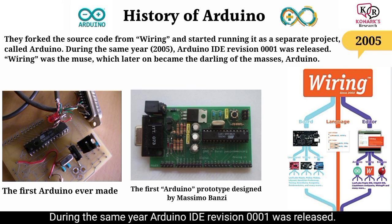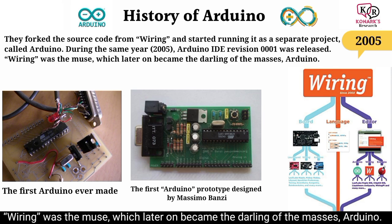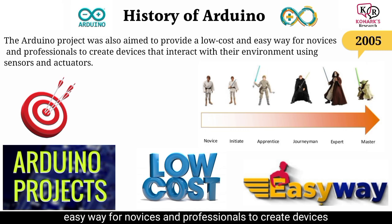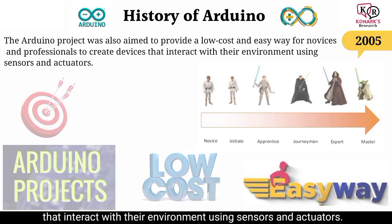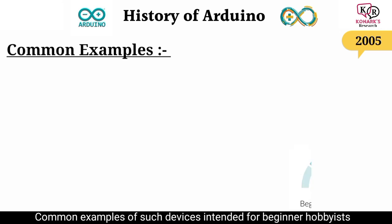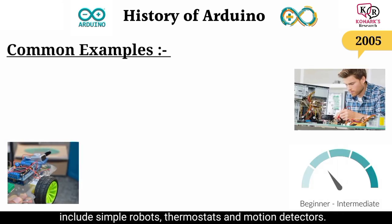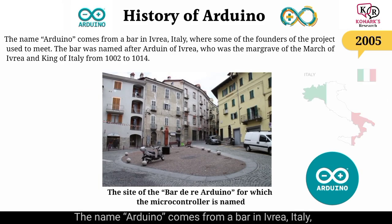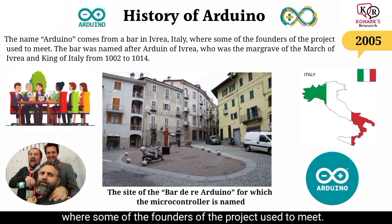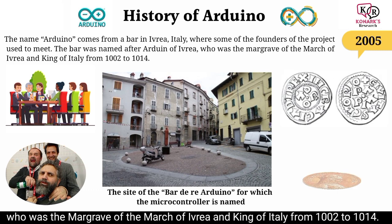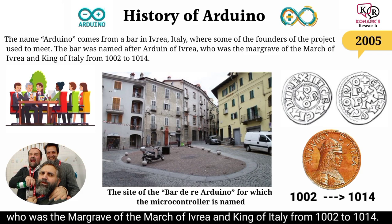They forked the source code from Wiring and started running it as a separate project called Arduino. During the same year, Arduino IDE revision 0001 was released. The Arduino project was also aimed to provide a low-cost and easy way for novices and professionals to create devices that interact with their environment using sensors and actuators — common examples include simple robots, thermostats, and motion detectors. The name Arduino comes from a bar in Ivrea, Italy, where some of the founders used to meet.